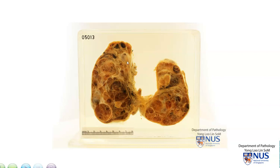In summary, this is an example of multinodular goiter, where the entire thyroid gland is enlarged, and it is involved by multiple nodules of different sizes, some with areas of hemorrhage. Some other nodules can also undergo cystic change. This is a benign condition, and it is due to impaired thyroid hormone synthesis.